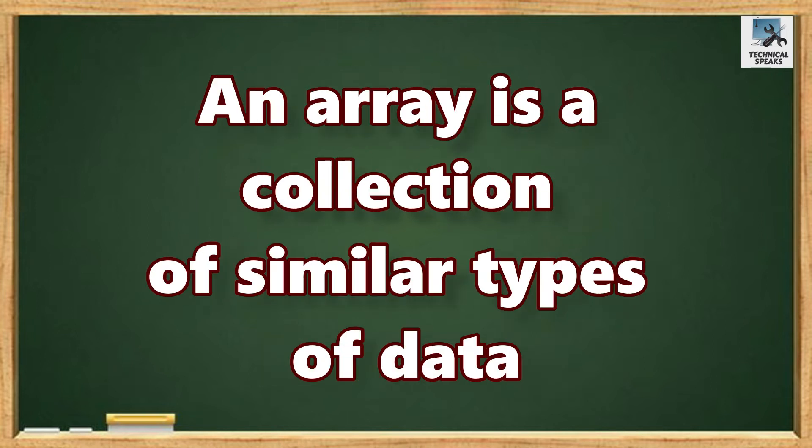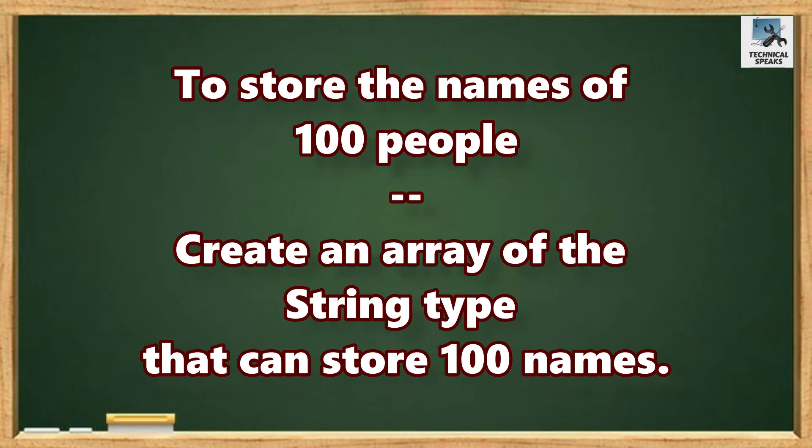By definition, an array is a collection of similar types of data. For example, if we want to store the names of 100 people,